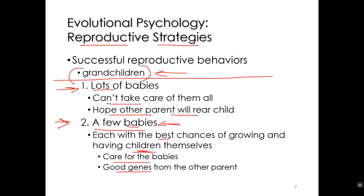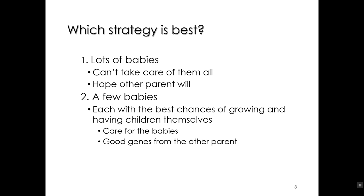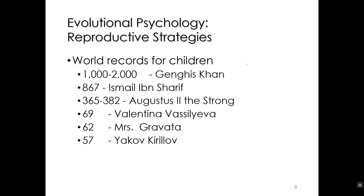Maybe you've realized that both strategies are good — however, they're not good for both genders. That's because there are different biological constraints on the number of children you can have. Here is a list of world records for having children. Genghis Khan fathered an estimated 1,000 to 2,000 children. Ishmael Ibn Sharif had 867 children. Augustus II the Strong had somewhere in the upper 300s. Those are the men. Then when we switch to women, we see a major difference: Valentina Vasilyeva holds the world record at 96 children.